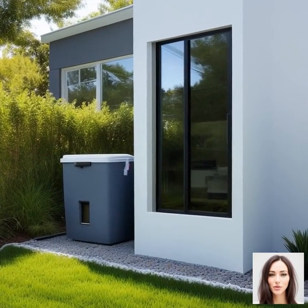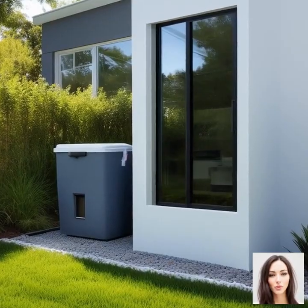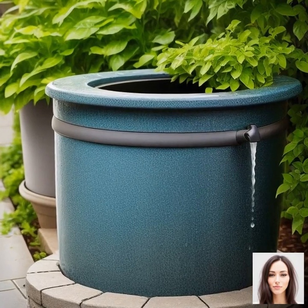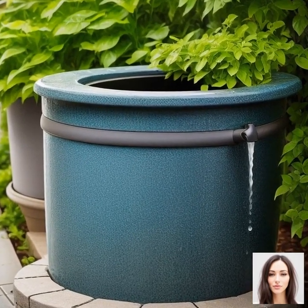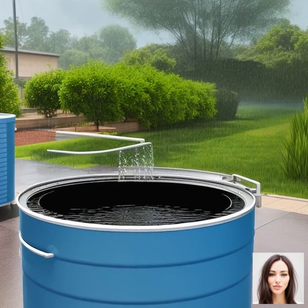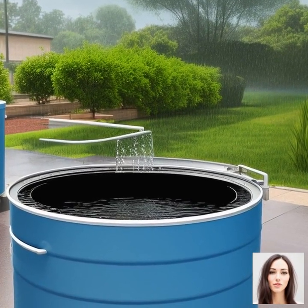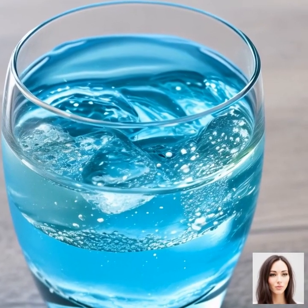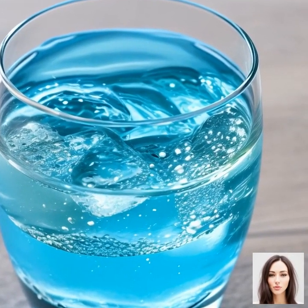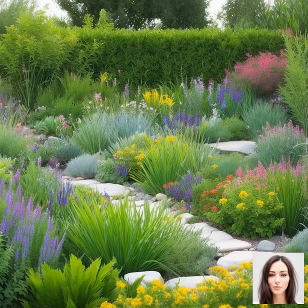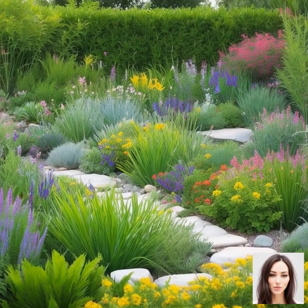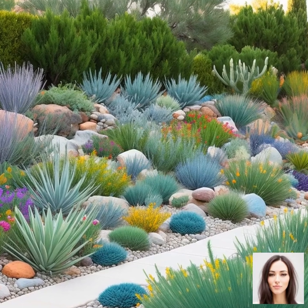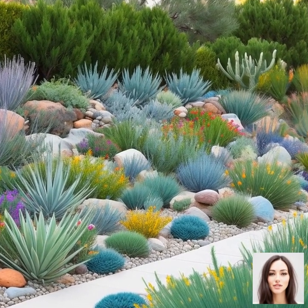Then there's greywater recycling. This involves taking the wastewater from showers, baths, and washing machines, treating it, and using it for things like flushing toilets or watering gardens. It's a great way to get double use out of the water we use in our homes. Rainwater harvesting is another important strategy — collecting rainwater that falls on our roofs, storing it in a tank, and using it for non-drinking purposes like watering gardens or flushing toilets. In some cases, with proper filtration and treatment, rainwater can even be used as drinking water.